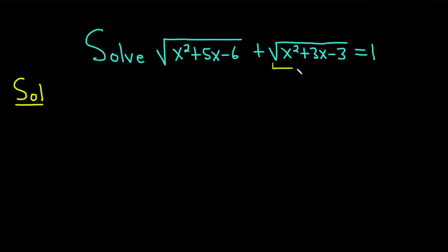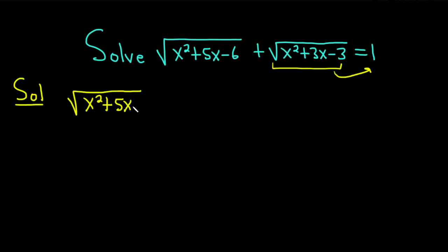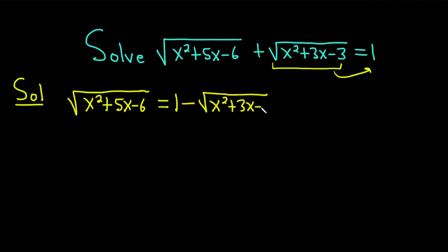Let's start by taking this second square root and subtracting it from both sides. We rewrite this as the square root of x squared plus 5x minus 6, and then because it's plus on the left, it's going to be negative on the other side — so it becomes 1 minus the square root of x squared plus 3x minus 3. Now we have a single square root on one side.